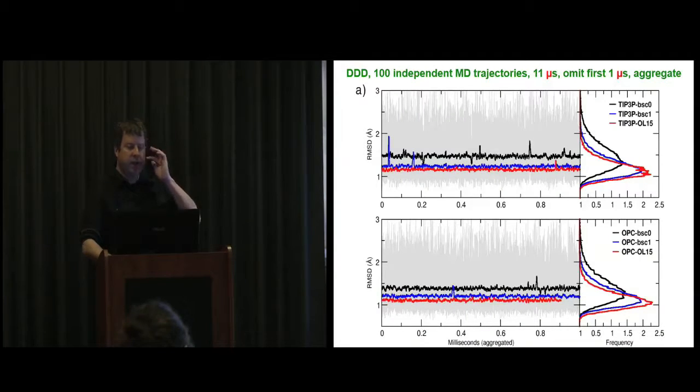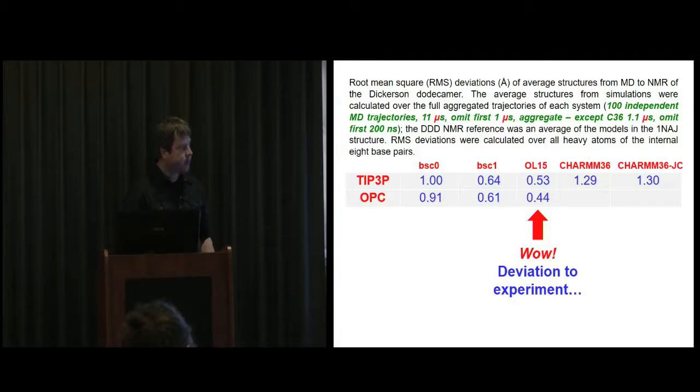This is some newer results. Just running 100 independent MD trajectories of the Dickerson dodecamer, the canonical DNA duplex structure. Comparing the older force field from AMBER in black to the newer force fields, the Czech one and the PARMBSC1 force field from Barcelona, the blue and red are closer to zero. This is an average of how far away you are from the experimental structure as a function of time. What's truly astonishing to me is that the root mean squared deviation, if we get rid of the two terminal base pairs on each end, we have sub-angstrom agreement with the OL15 force field of 0.53 angstroms in one particular water model or 0.44 angstroms in this newer four-point water model called OPC.